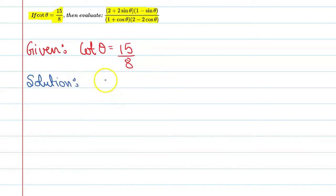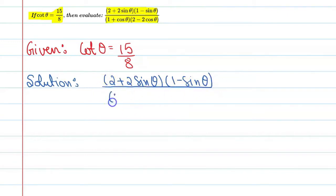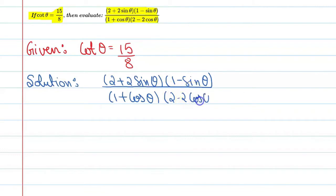So we need to find the value of this. Let's write it here: 2 plus 2 sine theta, into 1 minus sine theta, upon 1 plus cos theta into 2 minus 2 cos theta.